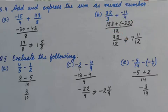So, answer is 95 upon 12. And when we convert it into mixed fraction, the answer is 7 whole number 11 upon 12.